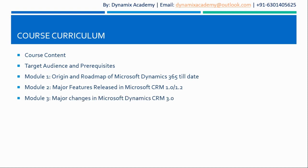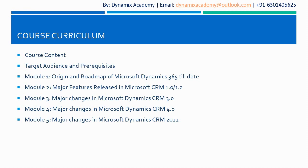In module number three we will see the major changes done in Microsoft Dynamics CRM 3.0. You might be wondering where version 2.0 is — Microsoft never released an official version called CRM 2.0. In module number four we will see the major changes in Microsoft Dynamics CRM 4.0, and in module number five the major changes in Microsoft Dynamics CRM 2011. From this point Microsoft changed its naming convention from version numbers like 1.0, 3.0, 4.0 to suffixing the product name with the year of release.